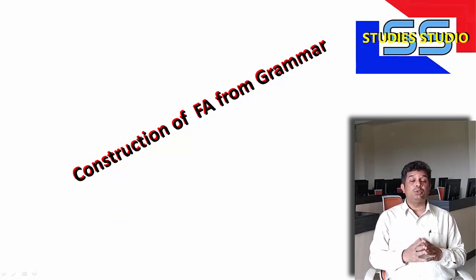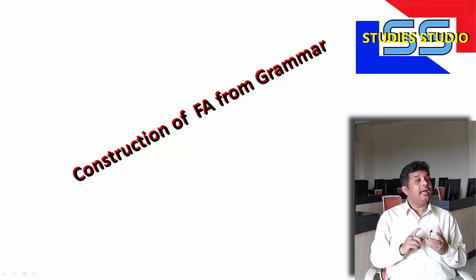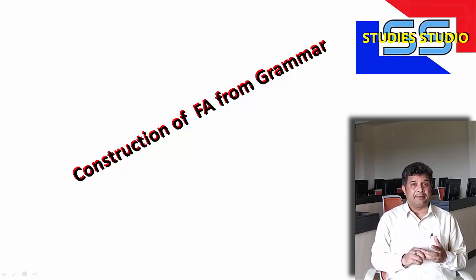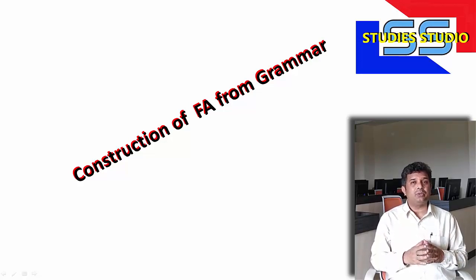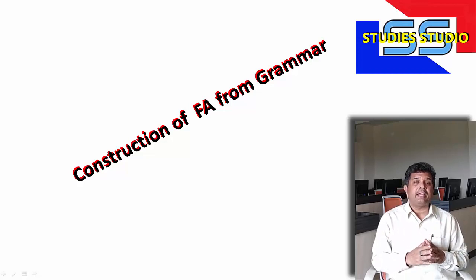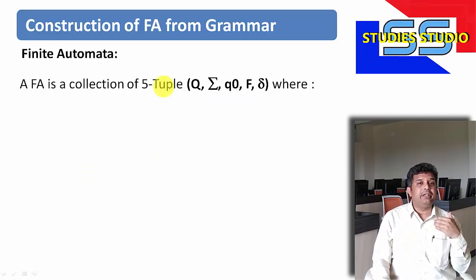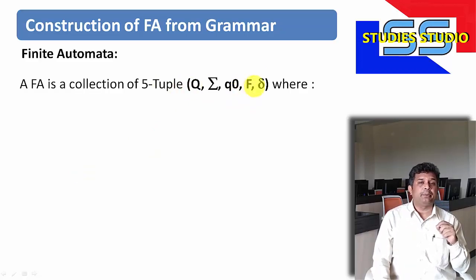In our previous videos, we have already seen what is a finite automata and what is a graph. In today's video, we are going to see how to construct a finite automata from a given graph. Basically, a finite automata we define with this five-tuple.